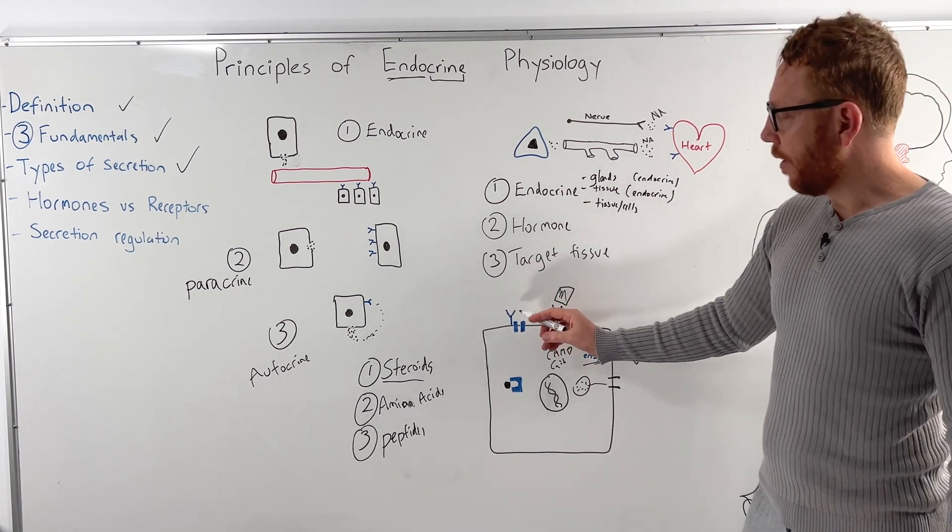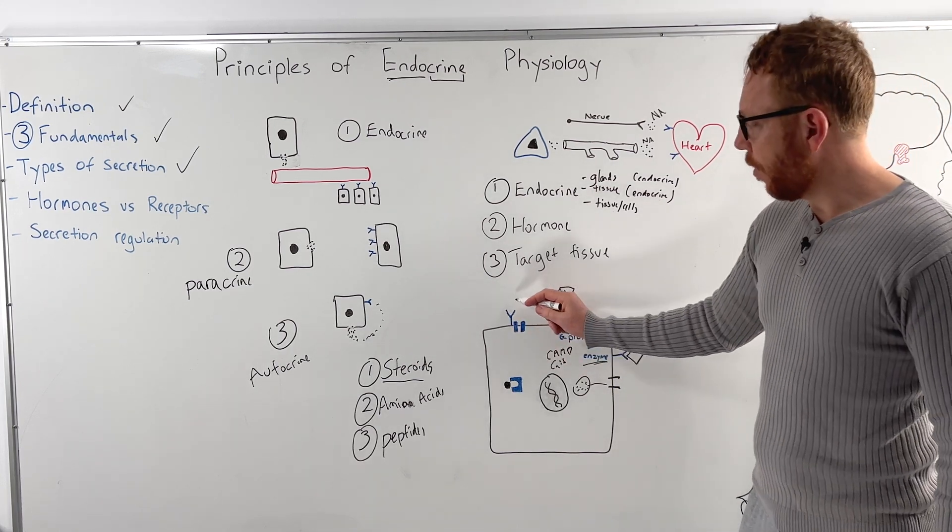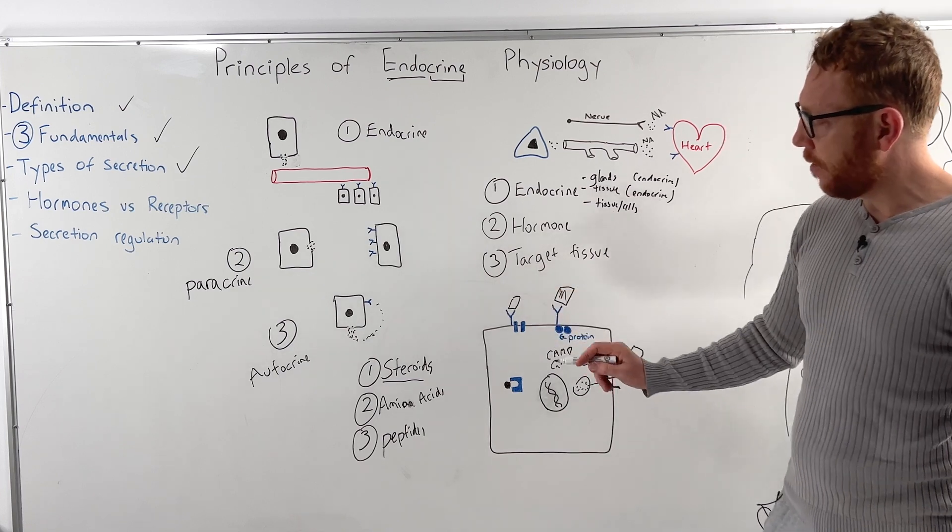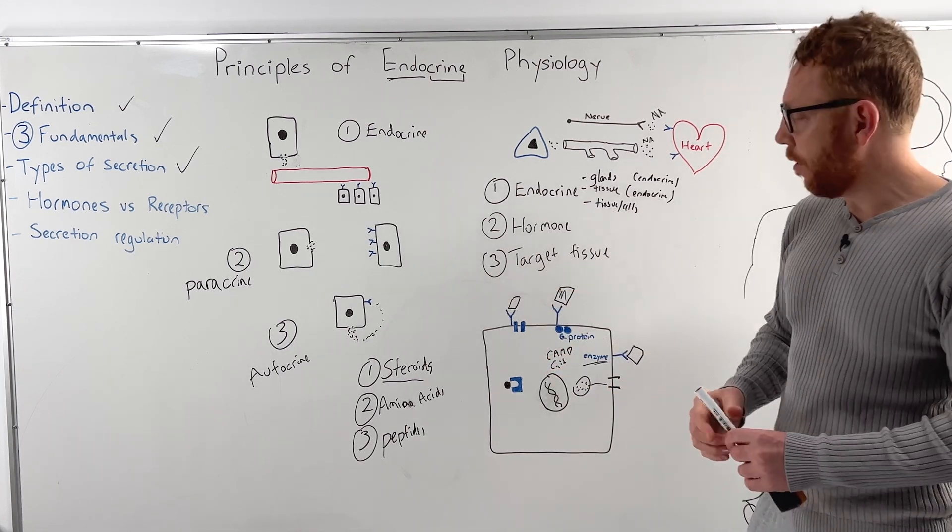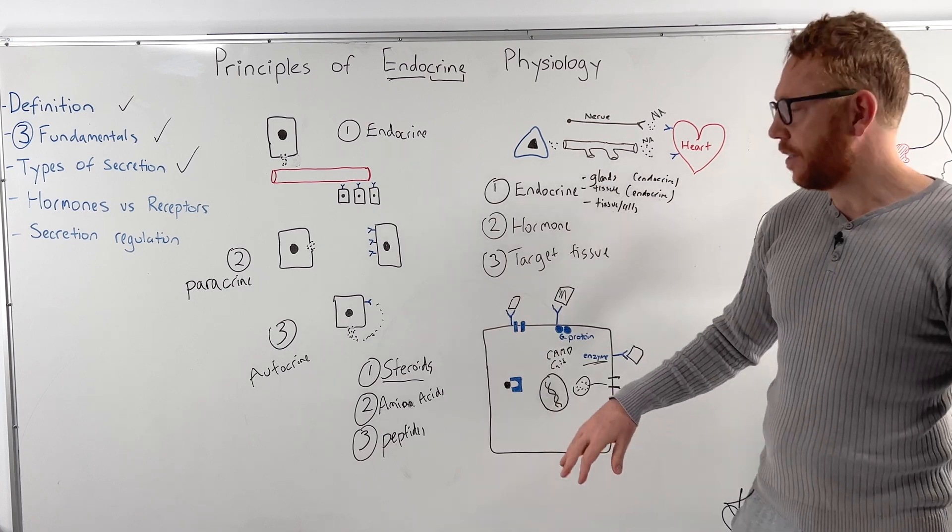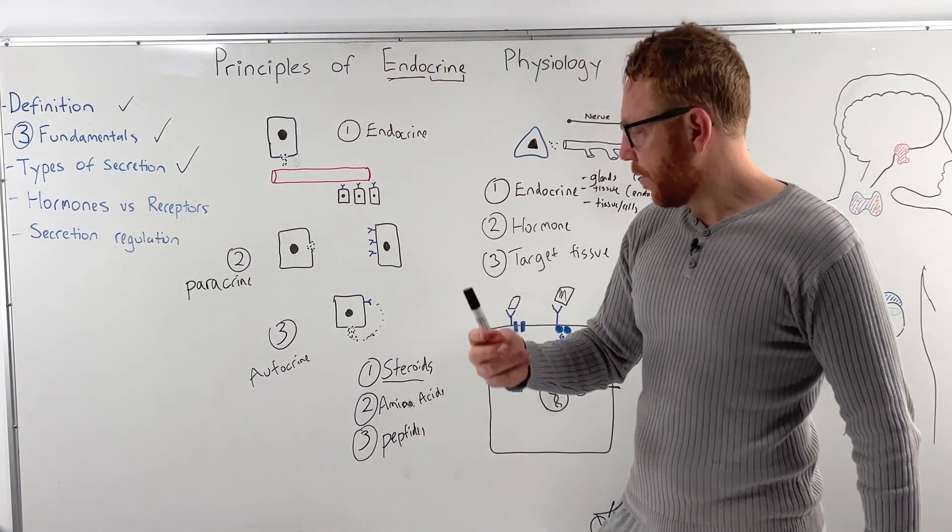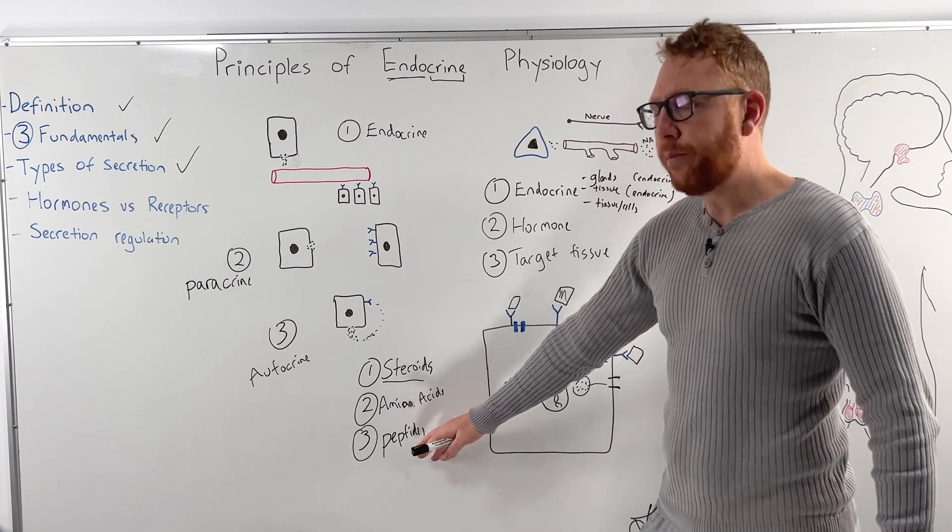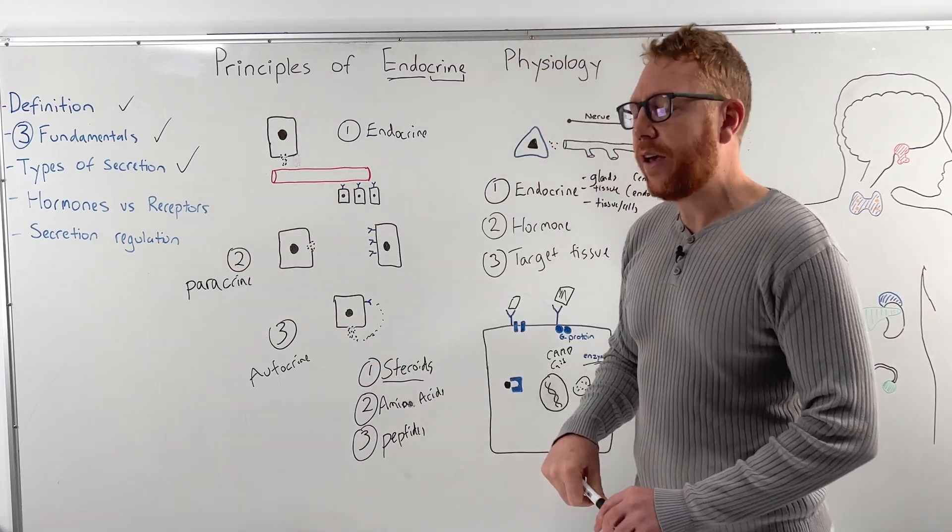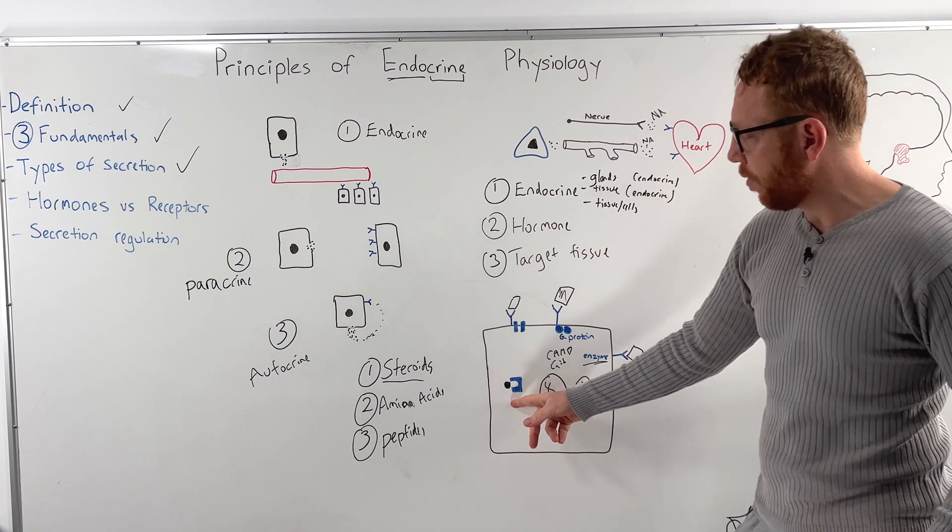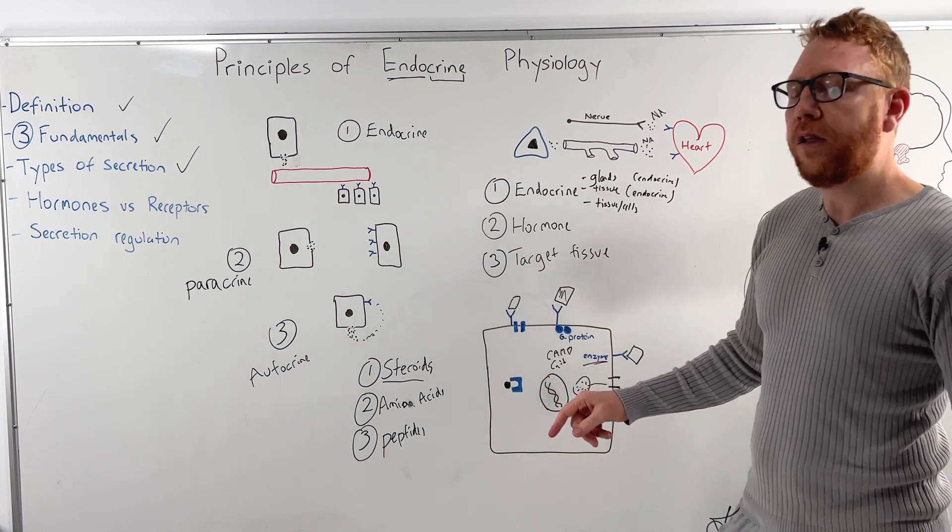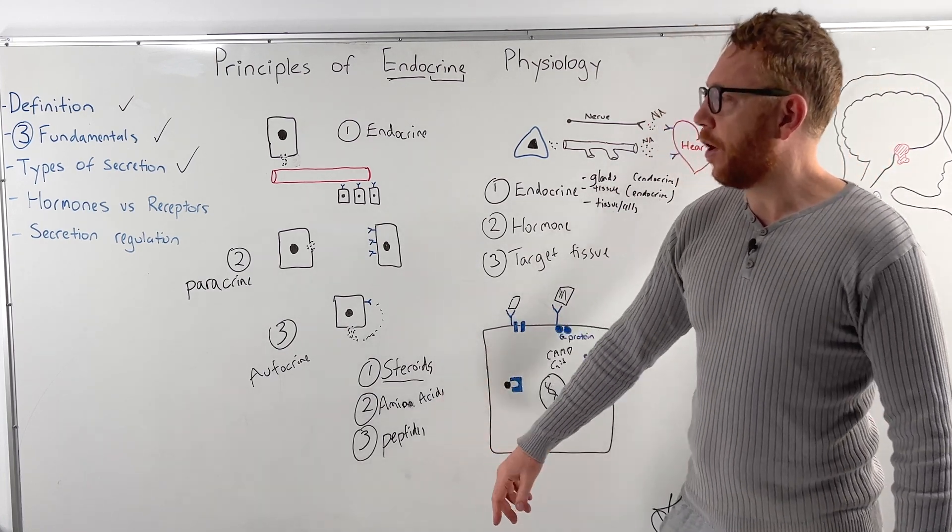One other one is a ligand ion-gated receptor, so where the hormone binds, it opens an ion channel, therefore ions can go into the cell. So these are the classic hormones, three types of hormones, steroid, amino acid, peptides, and the receptors are either going to be in the cell for steroid-based ones, or on the outside of the cell for the amino acid peptide ones.